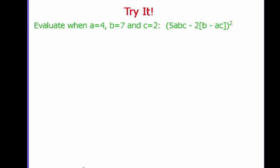I'm going to leave you with a try-it problem. It says evaluate when a equals 4, b equals 7, and c equals 2. I have 5 times a times b times c minus 2 times the quantity b minus a times c, and the whole thing is squared. You need to do this problem in your notes and bring it to class tomorrow.